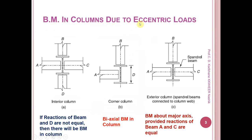Next, bending moment in a column due to eccentric loads. This is the top view of a column with beams coming from four directions. When the reaction from beams A and C are equal, there is no bending moment about the minor axis. Similarly, if reactions from beam B and beam D are equal, there will be no bending moment about the major axis. If the reactions transferred are the same, there is no possibility of bending moment.